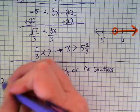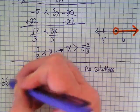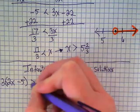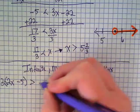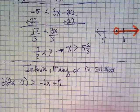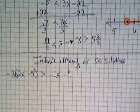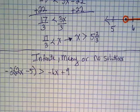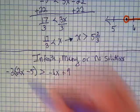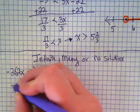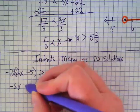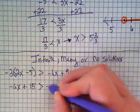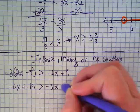Negative 3 times 2x minus 5 is greater than negative 6x plus 9. Parentheses. There is parentheses. So we're going to multiply. Negative 3 times 2x is going to be negative 6x. Negative 3 times negative 5 is going to be positive 15 is greater than negative 6x plus 9.